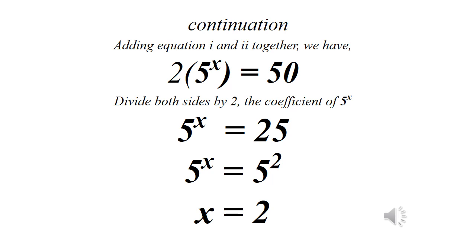If we add both equations together, we get 2 times 5 raised to power x equals 50. Dividing both sides by 2 gives us 5 raised to power x equals 25. Since 25 is 5 squared, we have 5 raised to power x equals 5 squared. Since the bases are equal, we equate the powers, so x equals 2.